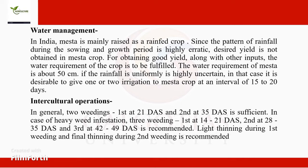For water management: in India, mesta is mainly raised as a rain-fed crop. Since the pattern of rainfall during sowing and growth period is highly erratic, desired yield is not always obtained. The water requirement of the crop is about 50 centimeters. If rainfall is uneven or uncertain, it is desirable to give one or two irrigations to the mesta crop at intervals of 15 to 20 days.